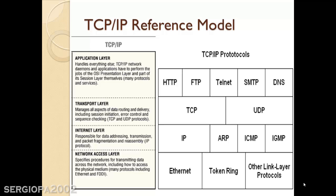TCP being connection-oriented means that from end to end, the data is sent reliably, with reliability and different controls and checks. Then we have the UDP protocol — the User Datagram Protocol — which is connectionless oriented, so it doesn't establish a connection, and acknowledging packages don't circulate as much as with TCP. UDP is useful for applications where speed is essential, like live video.